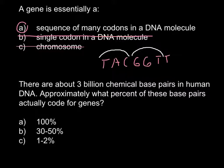Question number 2: there are about 3 billion chemical base pairs in human DNA. Approximately what percent of these base pairs actually code for genes? You probably already know this is not 100%. Some of you may mistakenly choose B, but it's also incorrect. The correct answer is C — only about 2% of the whole genome codes for proteins in our organism, and the rest, 98%, doesn't code for any protein.